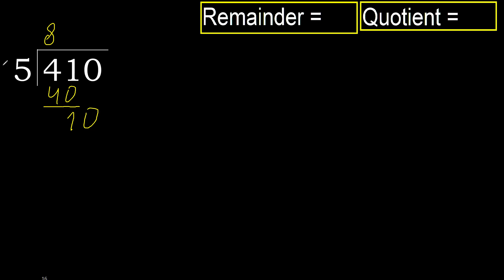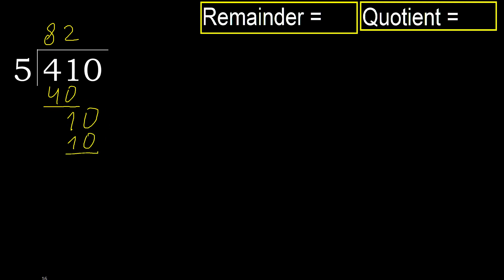bring down 10. 5 multiplied by 3 is 15. 15 is greater. Multiply by 2 — 10 is not greater. 10 minus 10 is 0.